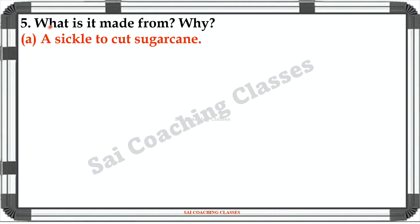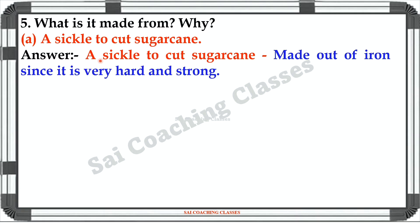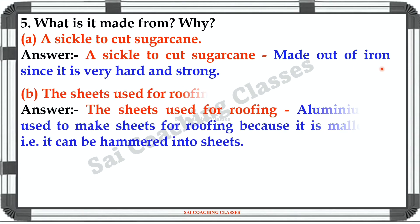Question number 5: What is it made from and why? A sickle to cut sugarcane. Answer: A sickle to cut sugarcane is made out of iron since it is very hard and strong. D1: The sheets used for roofing.